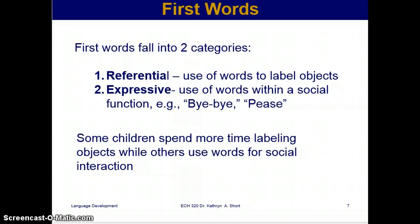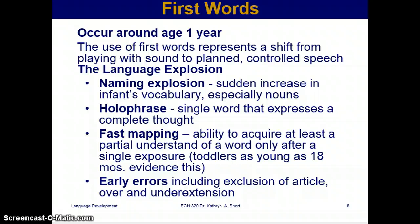First words occur around age one year. The use of first words represents a shift from playing with sound to planned, controlled speech — the language explosion. This includes the naming explosion: a sudden increase in infant vocabulary, especially nouns. There's also the holophrase — a single word that expresses a complete thought.